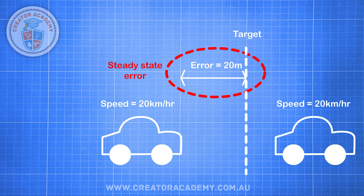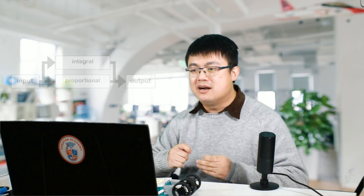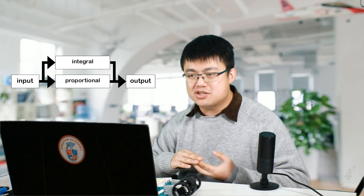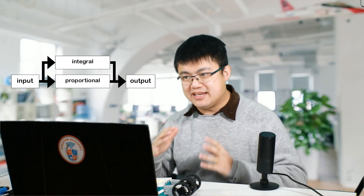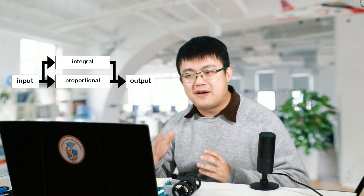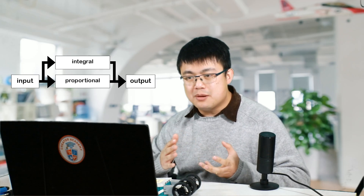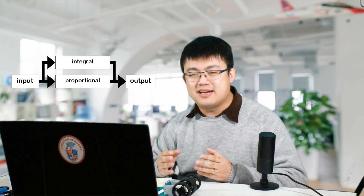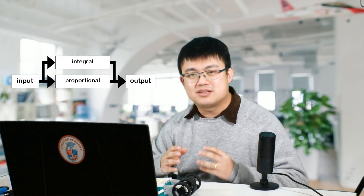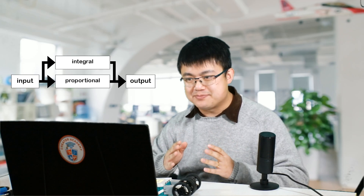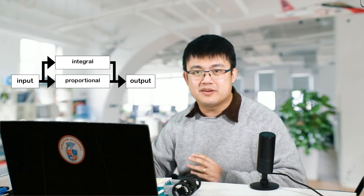To fix the steady state error, we add an integrator. The integrator pathway keeps a running total of the error. So as long as there is an error, the integrator will take over from the proportional path and increase our car's speed faster than when we only had the proportional path. The combination of both the proportional path and the integrator path is called a PI controller, and that will help us solve our car's behaviour when following a moving vehicle.